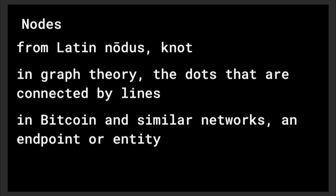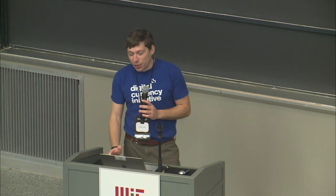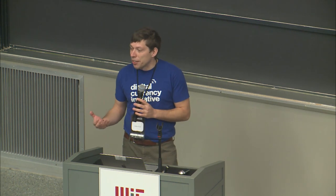So what is a node? Apparently it comes from the Latin word for knot. In graph theory we're thinking of the dots, not the lines — graph theory is the study of lines between dots. And in Bitcoin and similar networks, we're thinking of an endpoint, some kind of entity, the things that are talking to each other in Bitcoin.